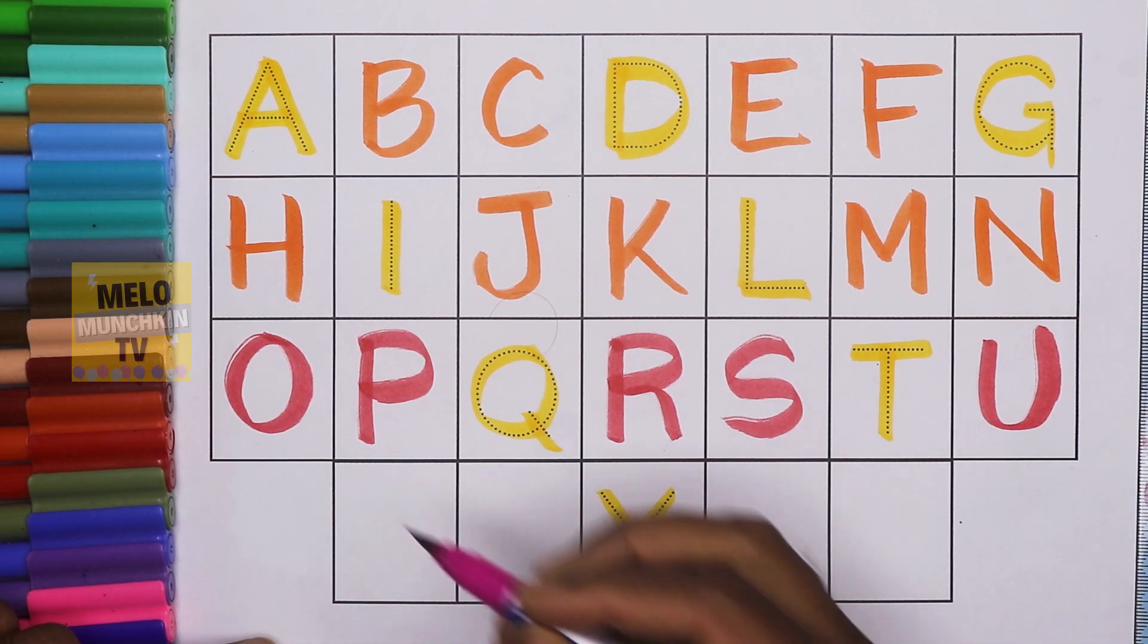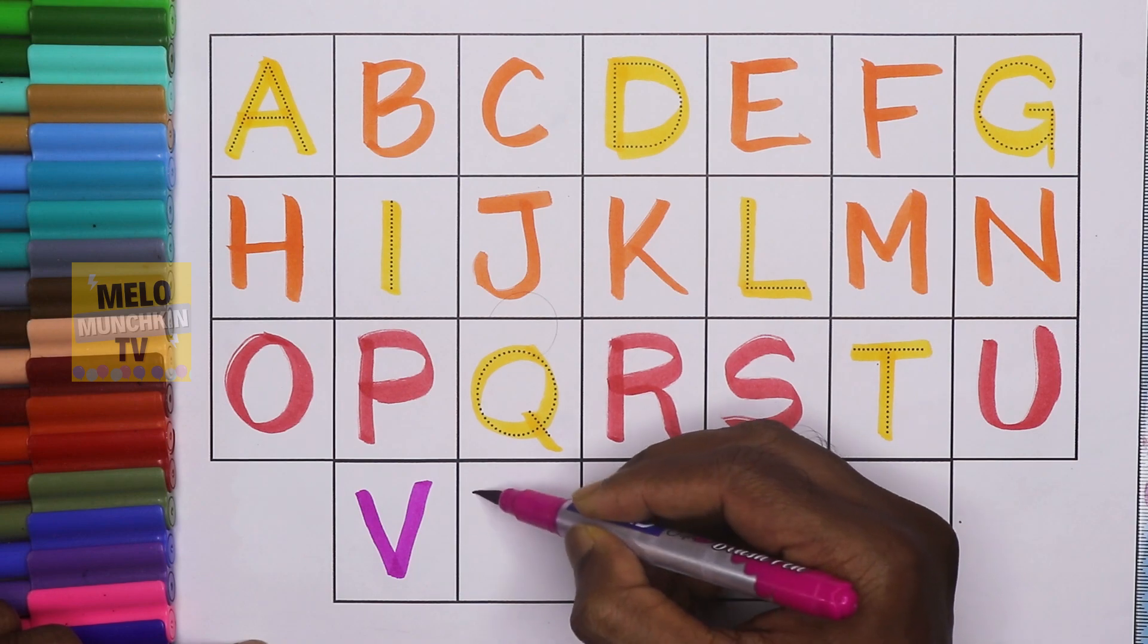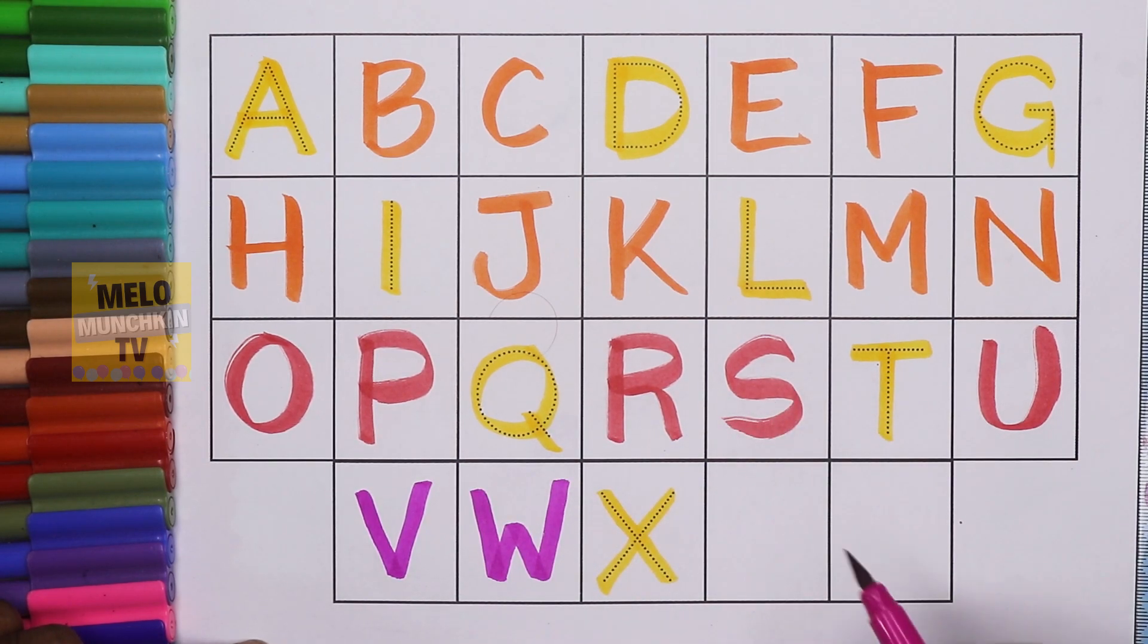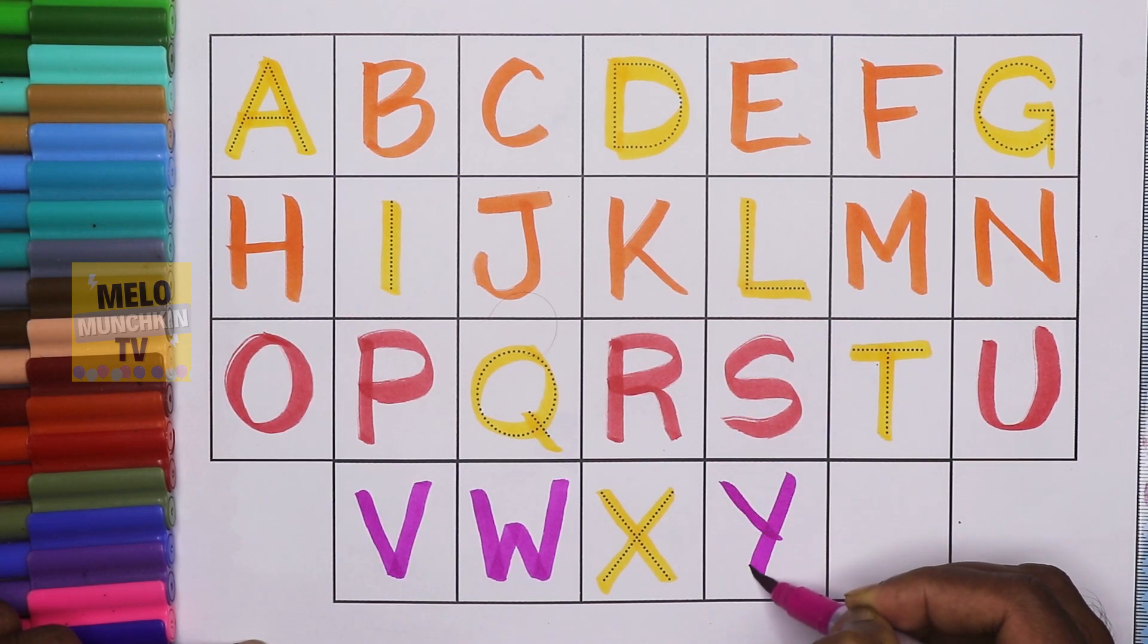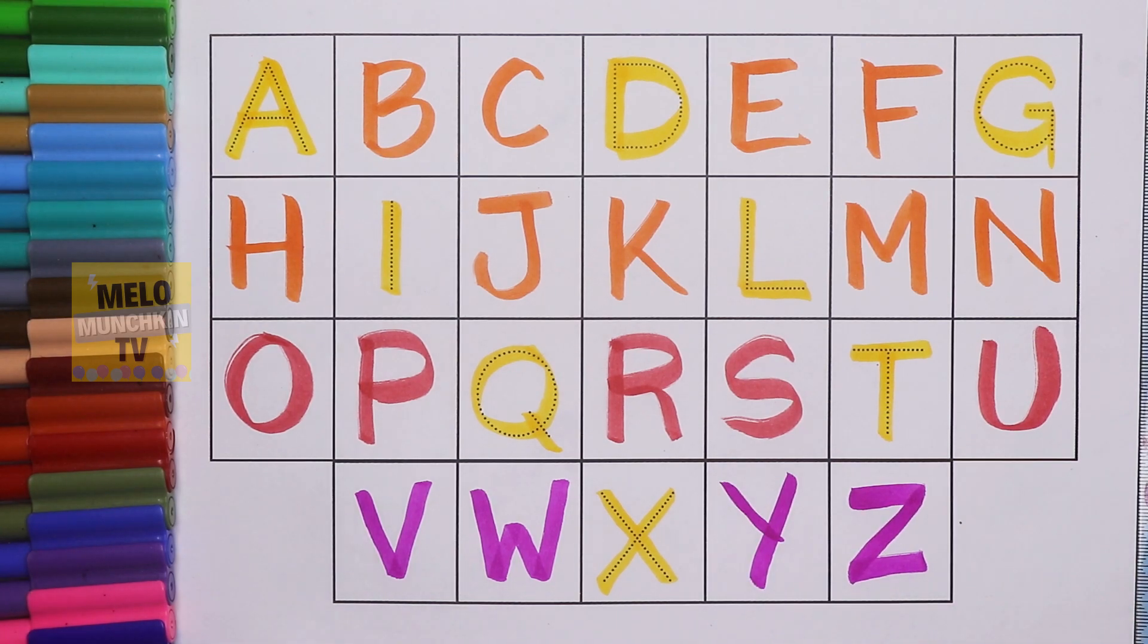After U it is V for van, then W for watch, then X. After X it is Y, then Z. Y for yak and Z for zebra. So we've completed our missing alphabets.